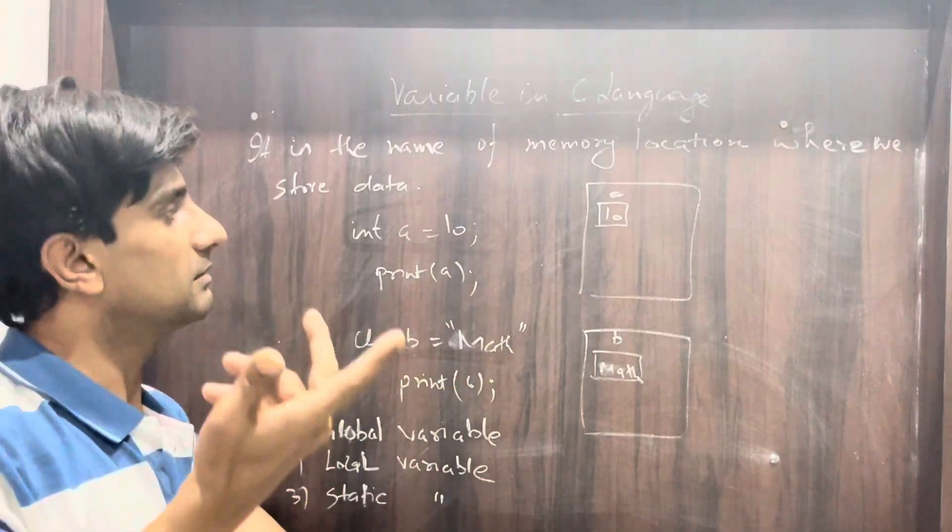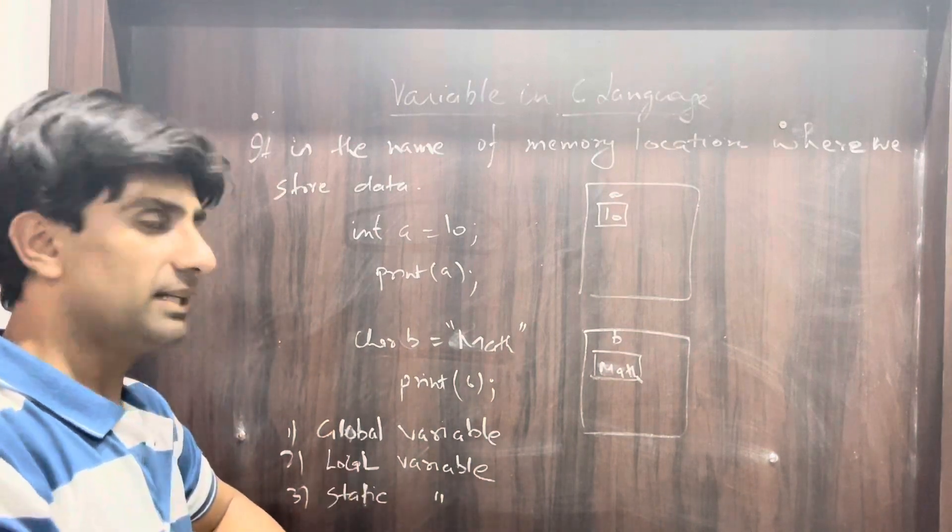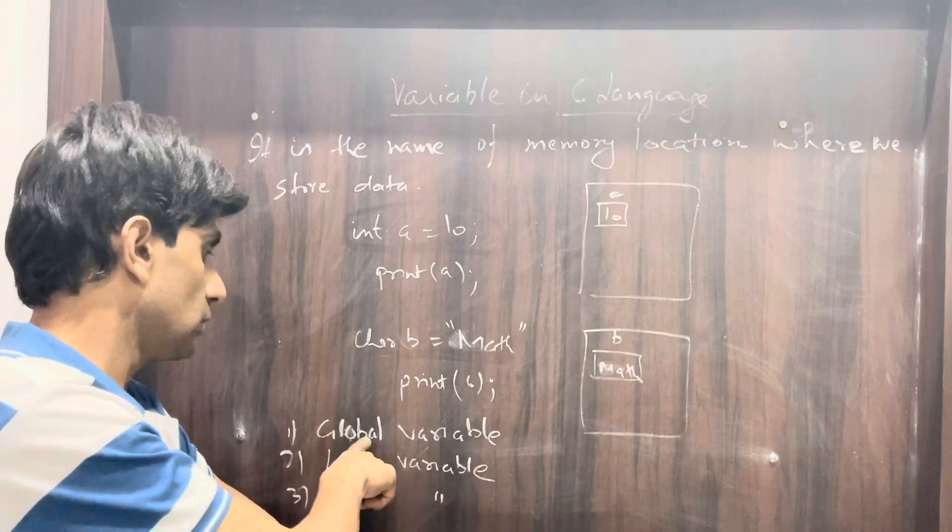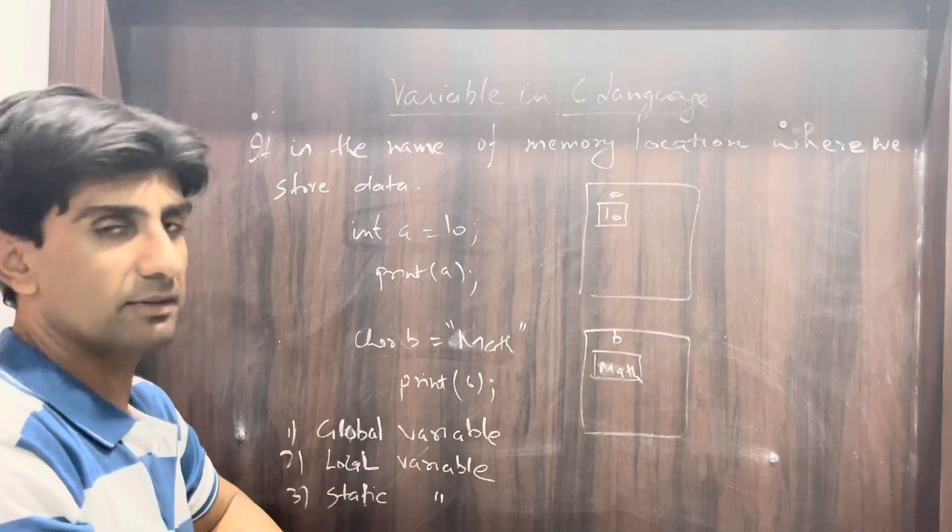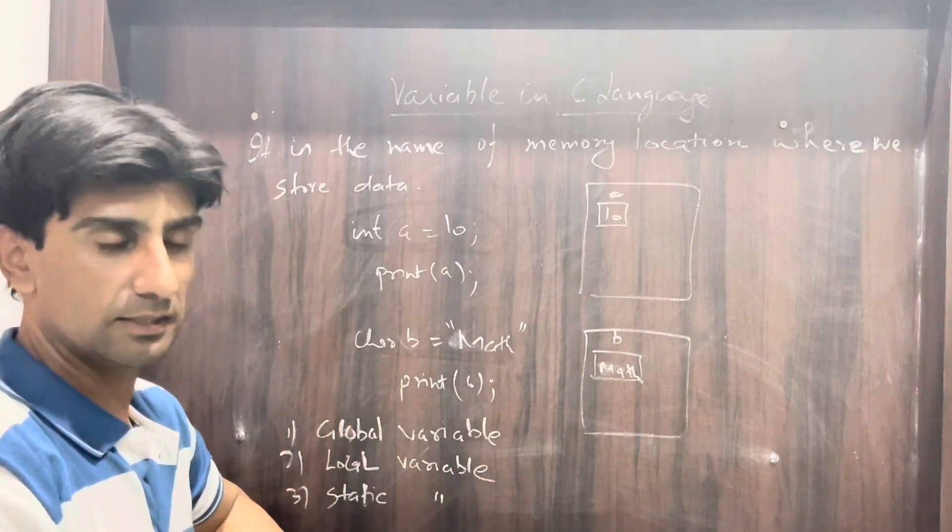Now, variables are of three types: global variable, local variable, and static variable. We will discuss these in the next video.